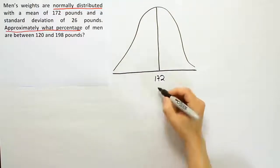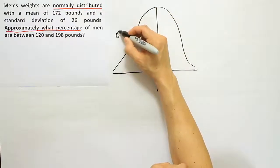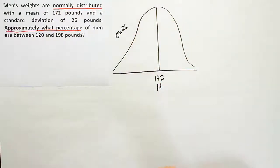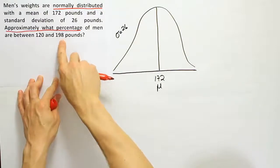You should always label some standard information on the curve like the mean. In this case, 172 is our mean. You should also put on the curve the standard deviation they give you, that is 26 in this case. The two numbers from the problem are 120 and 198.